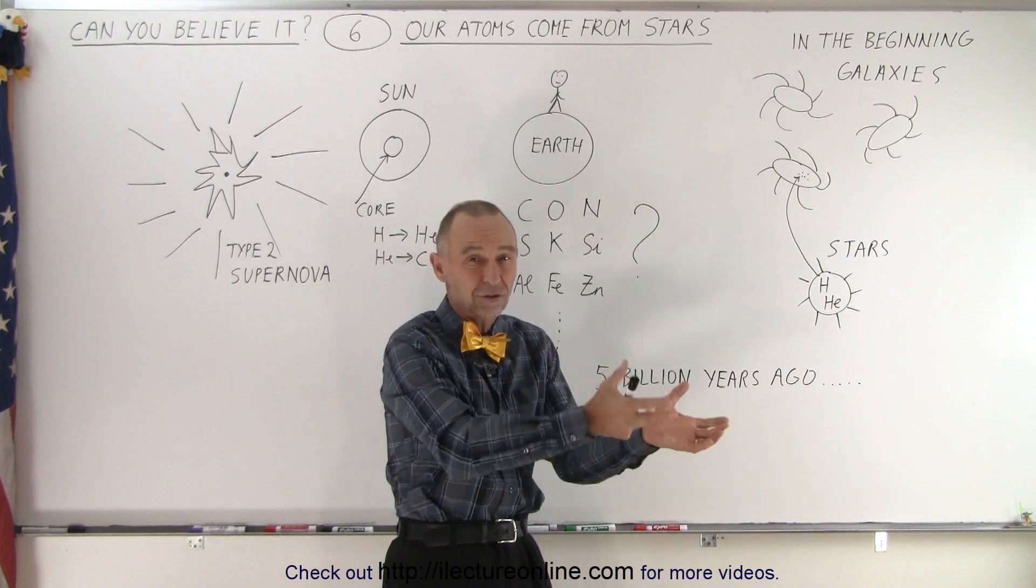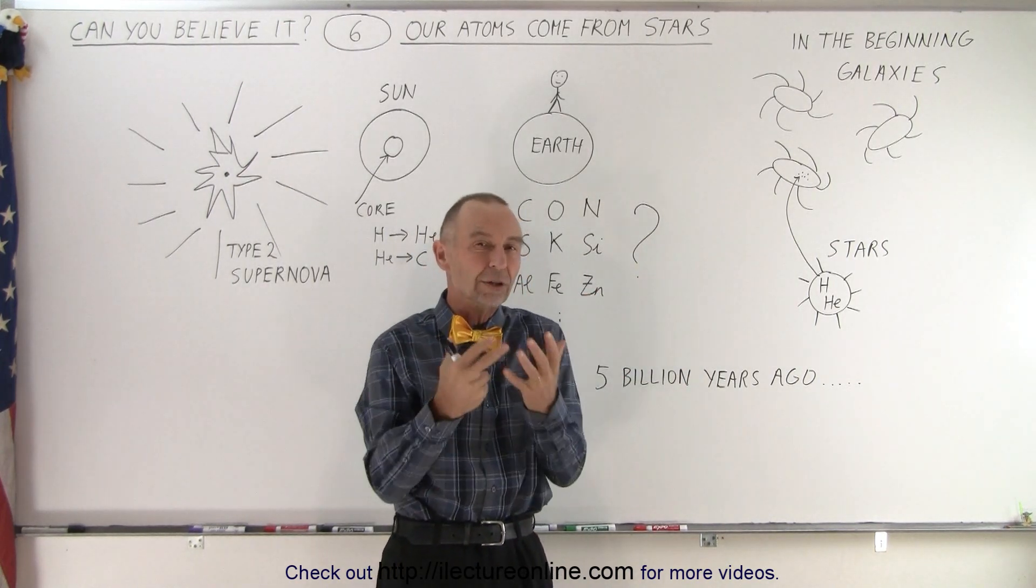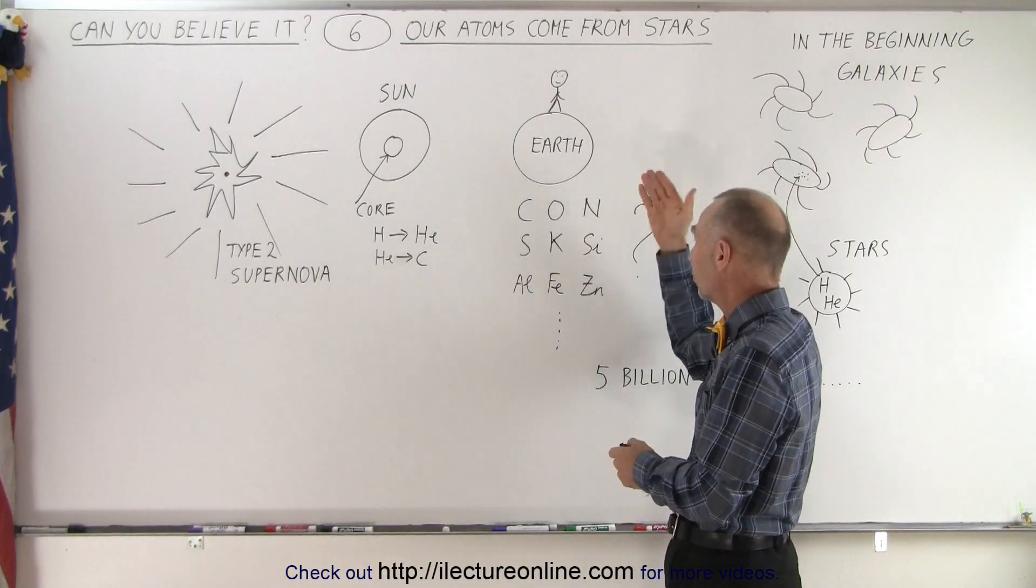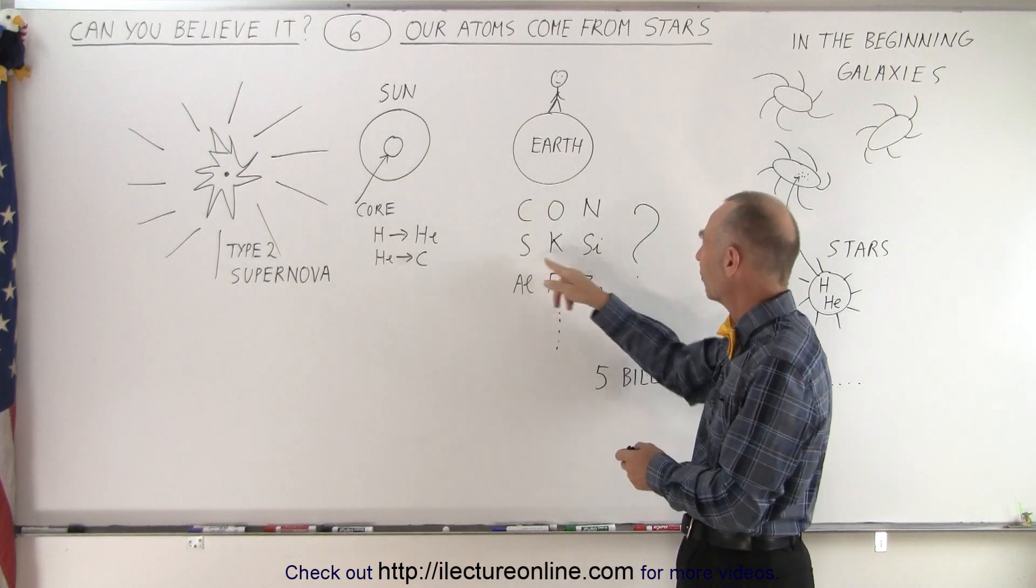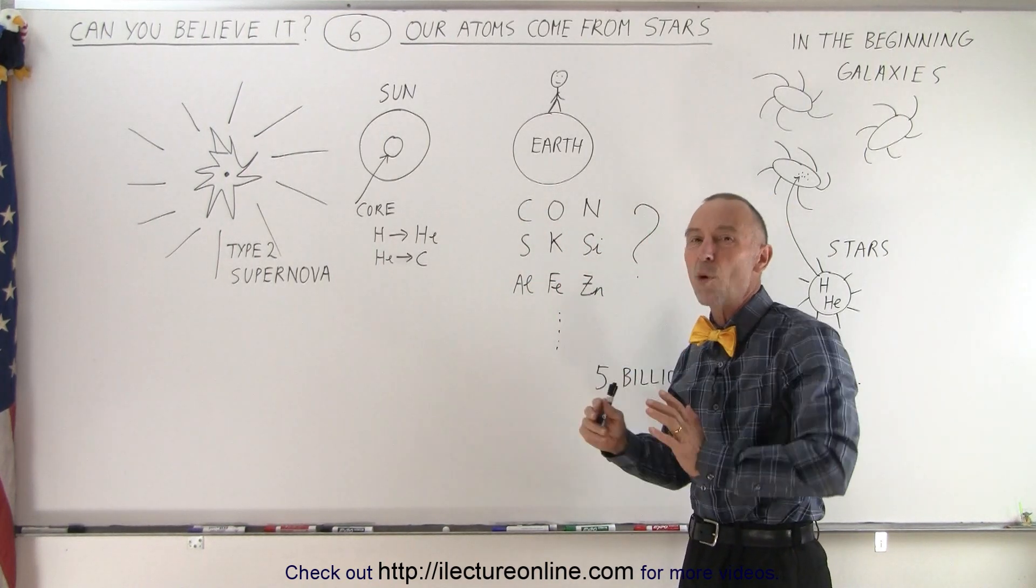The nebulas are typically hydrogen and helium, but they got infused by that massive quantity of all the other elements in the periodic table, like carbon, oxygen, nitrogen, silicon, potassium, sulfur, aluminum, iron, zinc, and many, many more.